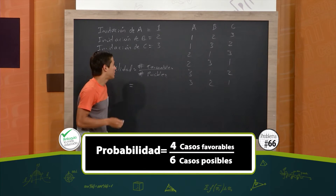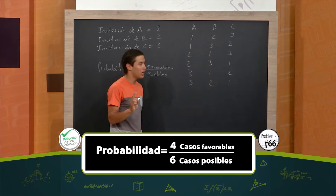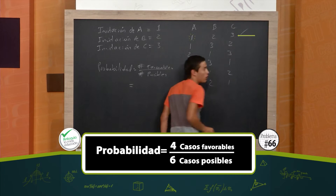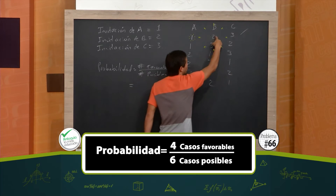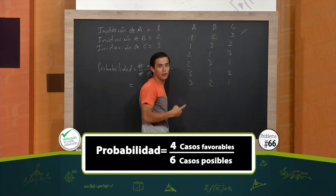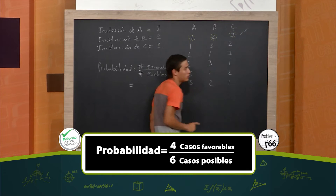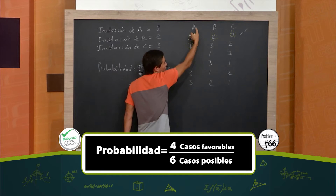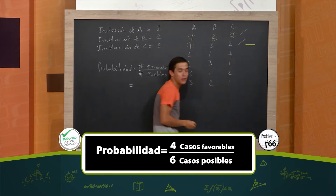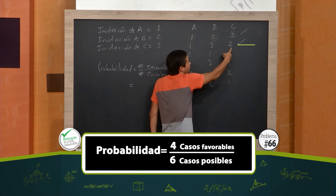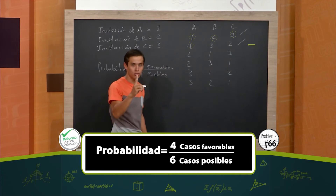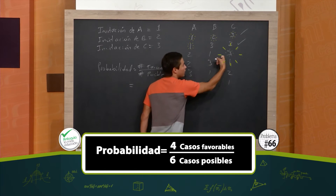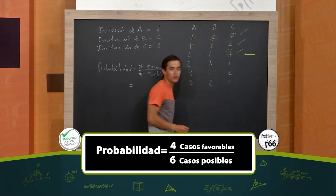Podemos observar. Como nos han dicho que al menos uno de ellos reciba la invitación bien, mire que el 1 llegó donde A, o sea que este caso es favorable. Es más, 2 llegó donde B, o sea que B recibió su tarjeta y 3 también recibió su tarjeta. Acá, el 1 llegó donde A, o sea que también A recibió bien su tarjeta, pero B no, ni C tampoco, pero el ejercicio dice que al menos 1. Observemos acá, no recibió bien su tarjeta A, tampoco B, pero C sí, entonces este también es un caso favorable.